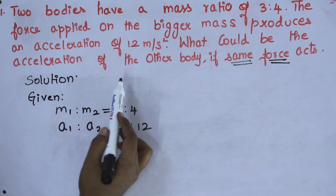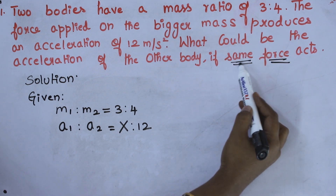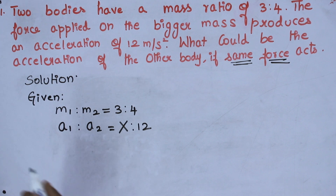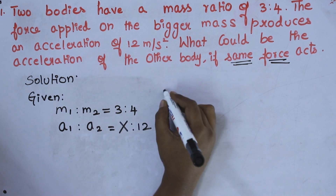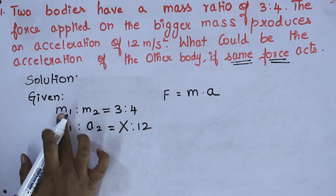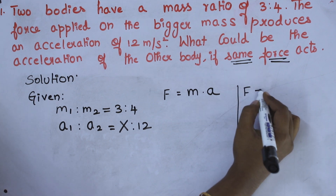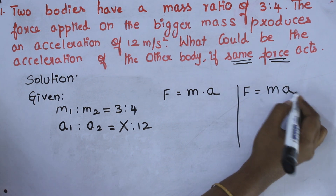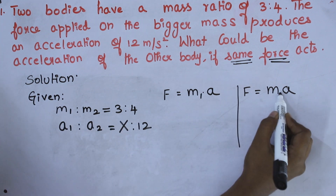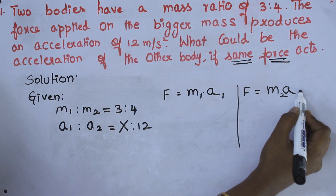What could be the acceleration of the other body if the same force is applied? You should underline this — same force. So F should be common. The formula we know is force equals mass into acceleration. We have M1 and M2, so I am writing F equals MA twice — for mass 1 with A1, and mass 2 with A2.